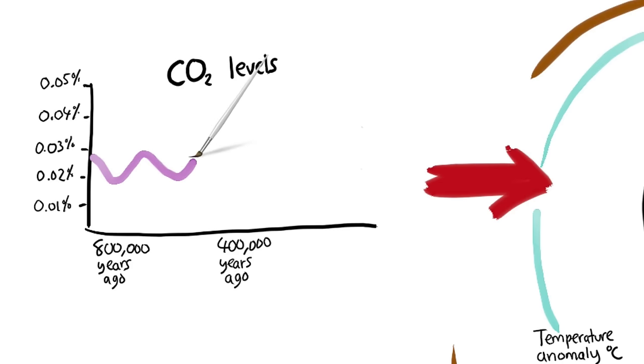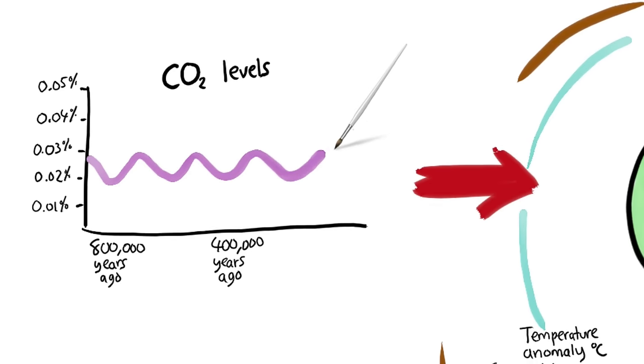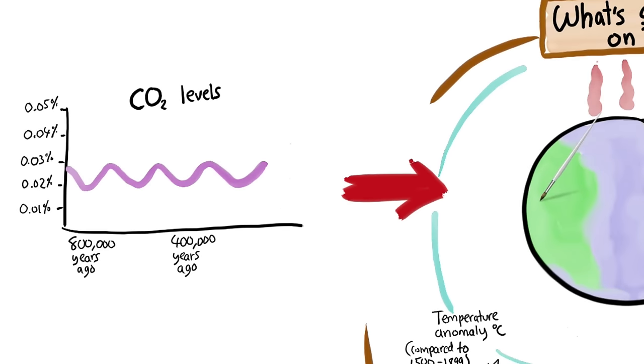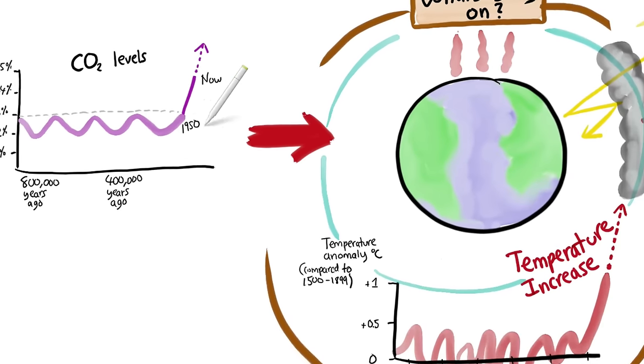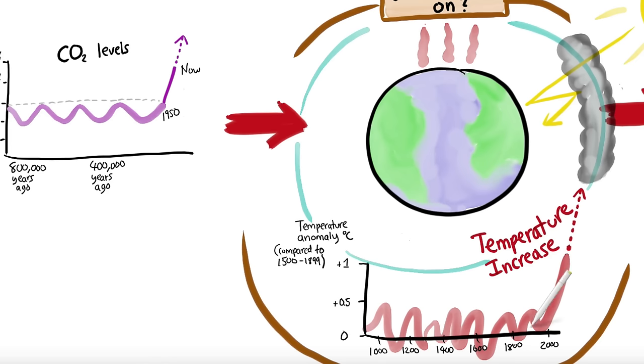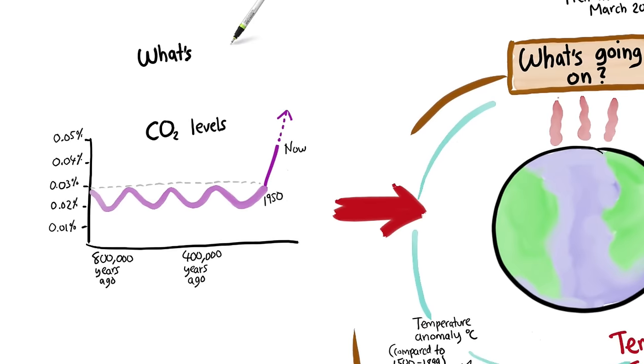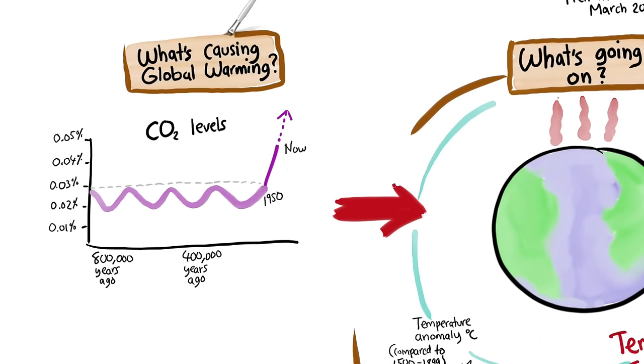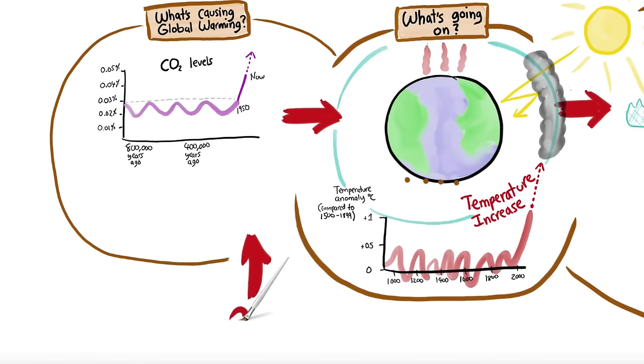But during the past 50 years or so, carbon dioxide concentration has suddenly increased by 40 percent. In 800,000 years it's never been above this line, and now suddenly it jumps to here and keeps rising. Rising CO2 levels, rising temperature—coincidence? No. Turns out this is the main cause of global warming. So why is carbon dioxide increasing?